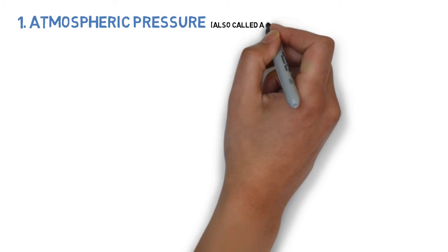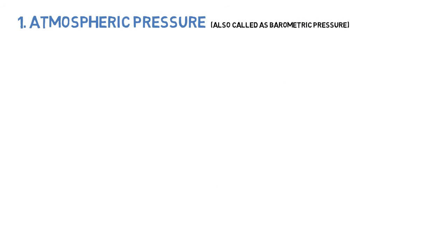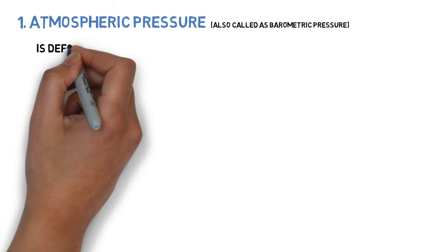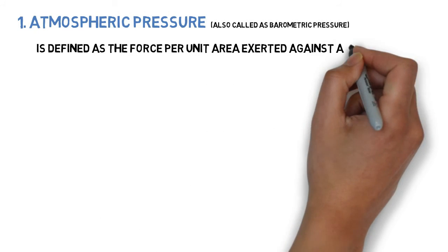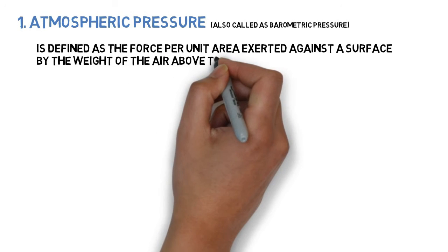Atmospheric pressure is also called barometric pressure. Atmospheric pressure is defined as the force per unit area exerted against a surface by the weight of the air above that surface.